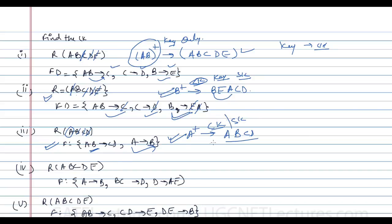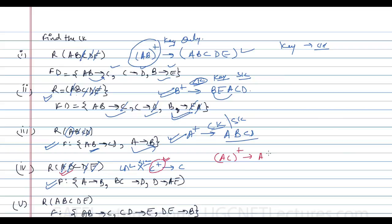For question four, R(A,B,C,D,E): on the right-hand side we have B, D, A, and E — so C is not present. Taking C closure alone gives only C; we cannot identify anything else, so C alone is not a candidate key. We need to add other attributes. Trying AC closure: with A we identify B, with BC we identify D, and with B we also get A — so AC is a candidate key.